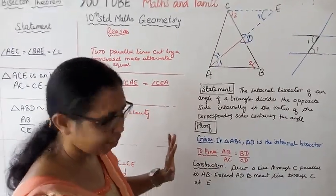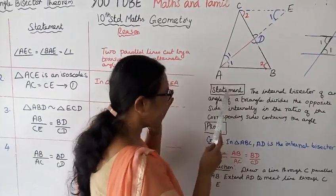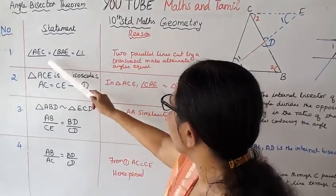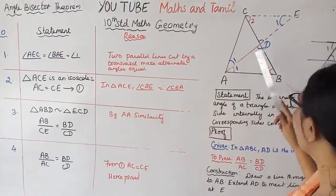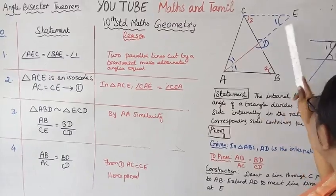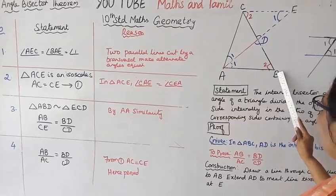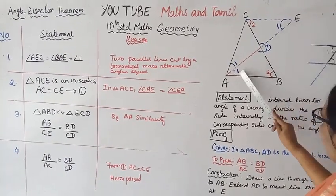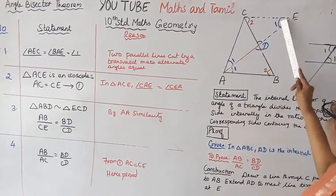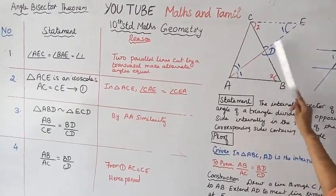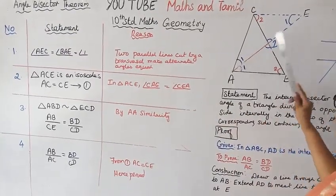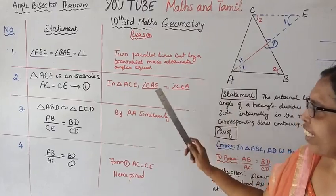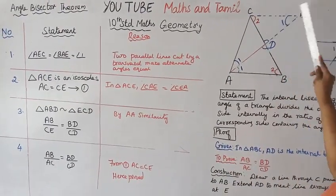Statement: angle AEC = angle BAE — that is alternate angles, two parallel lines cut by transversal. Triangle ACE is isosceles. How? Angle CAE equals angle CEA, so AC = CE (isosceles — two equal angles means two equal sides).